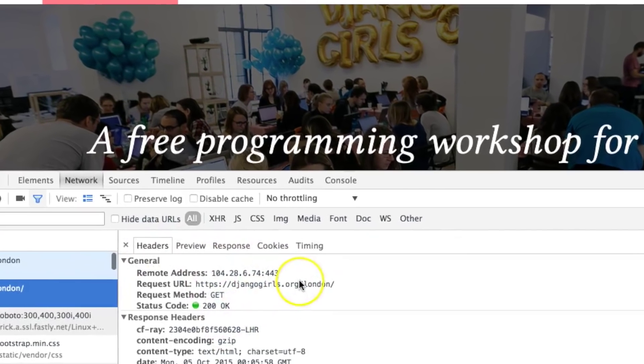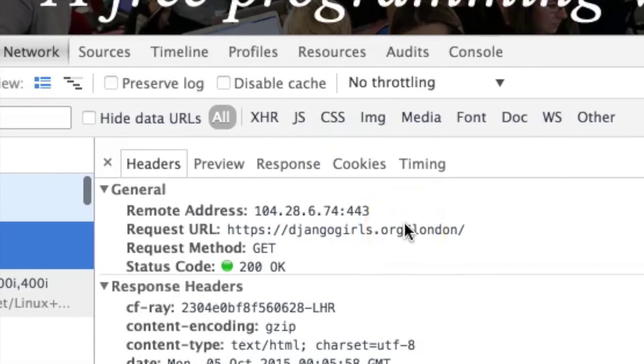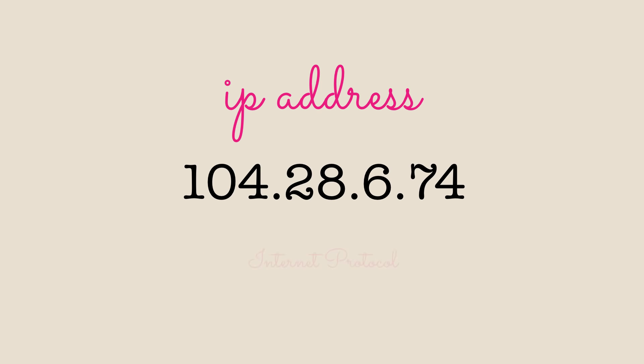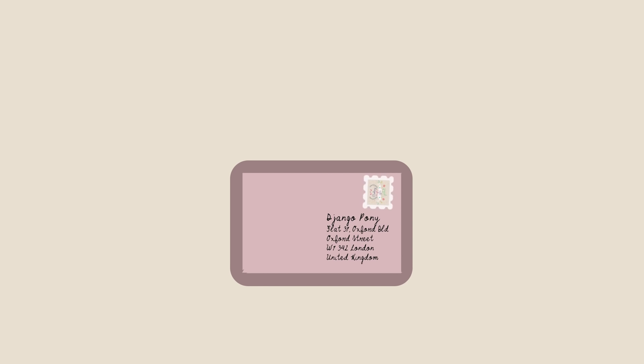The important part I want to show you is these four numbers with dots — it's an IP address. In the real world, when you want to send a letter to someone, you take your envelope and put the address of the person on it so it's delivered to the right person. It's very similar on the internet — you need to know the address, and this is the IP address. But how do you know that djangogirls.org is under this address?